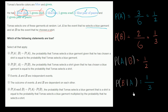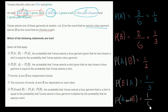And then finally, we can think about the probability of A and B — the probability of picking a blue shirt. Only one out of the six equally likely outcomes is a blue shirt, so this is going to be one sixth.